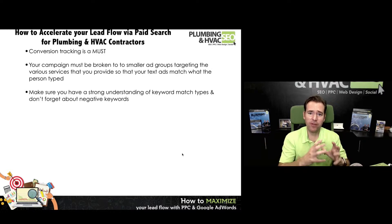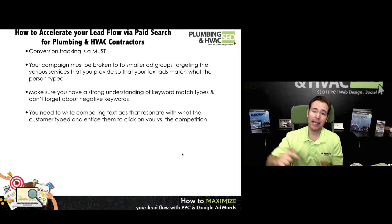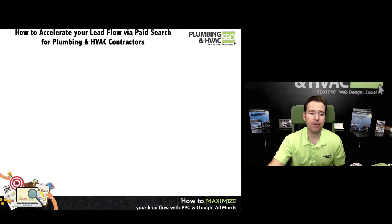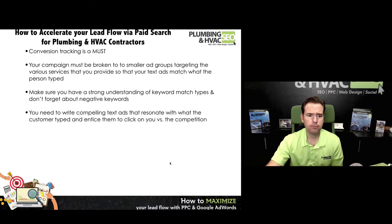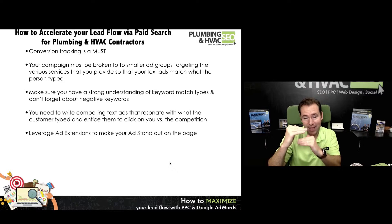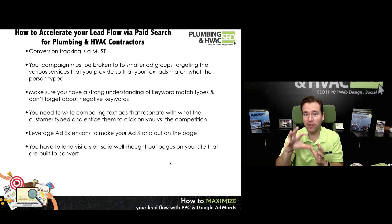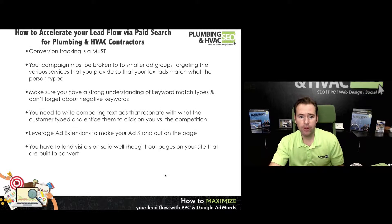You need to make sure you've got a strong understanding of the different match types. You've got to make sure you've got a really well dialed-in negative keyword list. You have to write compelling text ads that resonate and make the person want to click on your ad that stands out versus the competition. You need to leverage those call-out extensions to make your ad stand out on the page. And you've got to have good landing pages that are written specifically for the different ad groups that are congruent all the way through the process.